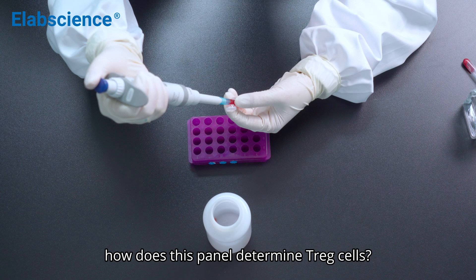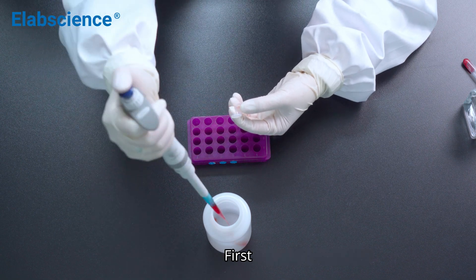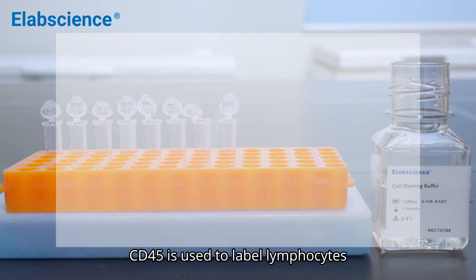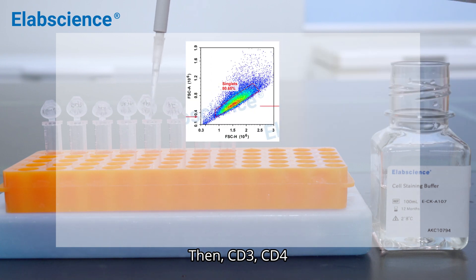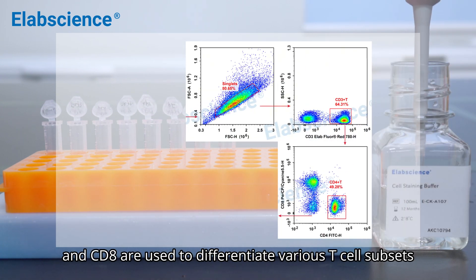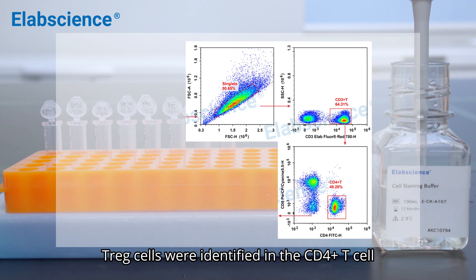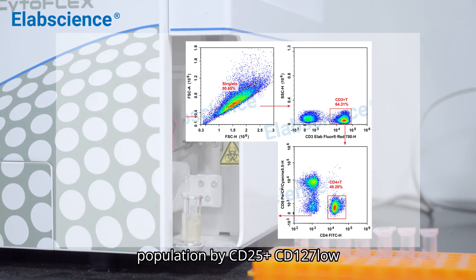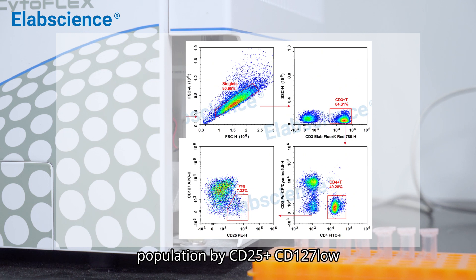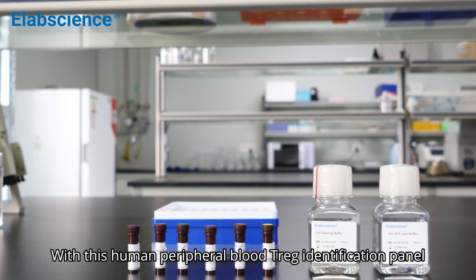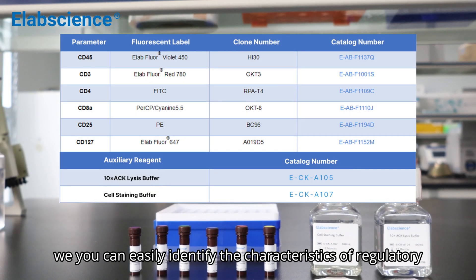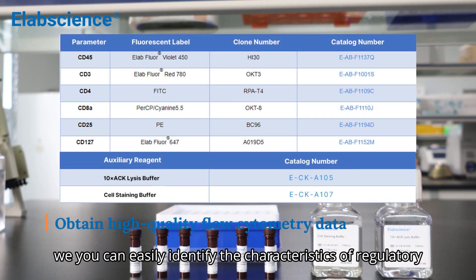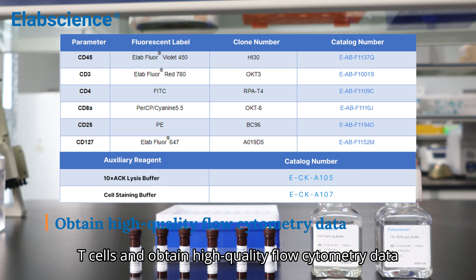So, how does this panel determine T-reg cells? First, CD45 is used to label lymphocytes. Then, CD3, CD4, and CD8 are used to differentiate various T-cell subsets. Finally, T-reg cells were identified in the CD4-positive T-cell population by CD25-positive CD127-low. With this Human Peripheral Blood T-Reg Identification Panel, you can easily identify the characteristics of regulatory T-cells and obtain high-quality flow cytometry data.